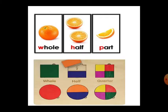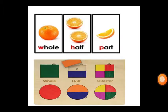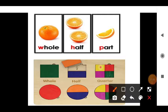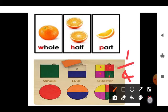Now you can see whole. If we divide the whole into two parts, each part will be one by two. If we divide into four parts — whole is divided into four equal parts: one, two, three, four — each part is one by four.